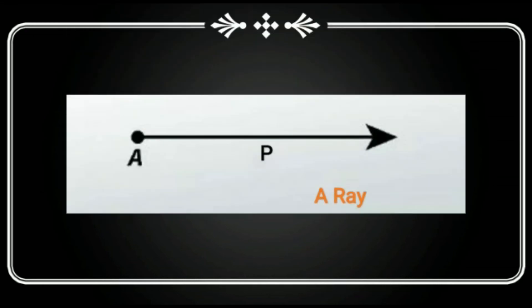A ray has got a starting point but no ending point. In the given figure, a ray is shown in which A is the initial point,